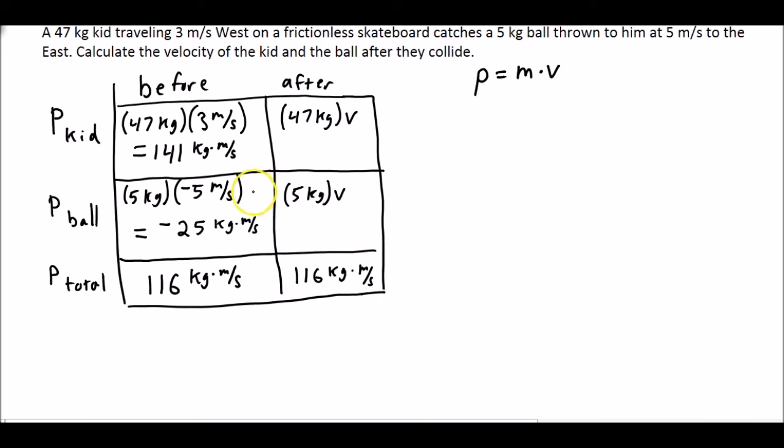So now that we have our data table, we can use algebra to solve for the velocity. So we know that these together need to add up to 116 kilogram meters per second. So we can add 47 kilograms times the velocity of the kid plus 5 kilograms for the ball times the velocity.